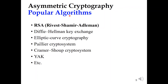Let's talk about some popular asymmetric cryptography algorithms used nowadays. The first one we must mention is the RSA algorithm. The RSA algorithm is used by most blockchain networks today. Other algorithms include Diffie-Hellman key exchange, ElGamal cryptography, Paillier cryptosystem, and so on. You can check for more details about these algorithms on the internet.